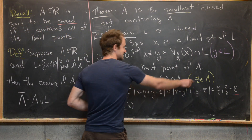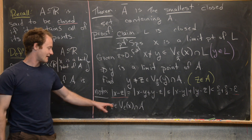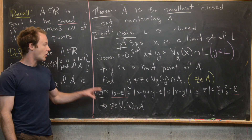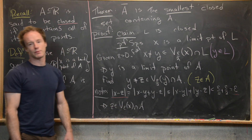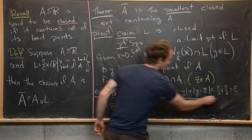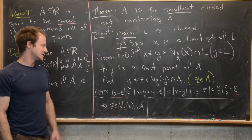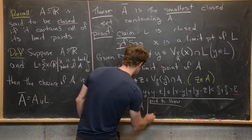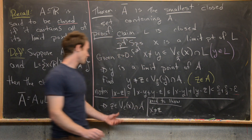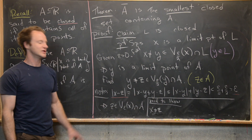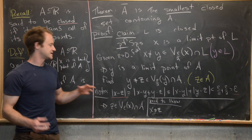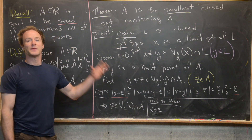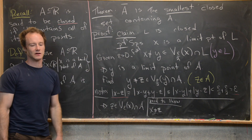We also know Z is an element from A, so Z is in the epsilon neighborhood of X intersected with A. That's almost enough for X to be a limit point of A, i.e., X to be in L. The last thing we need to show is that X is not equal to Z, which makes this intersection contain a point not equal to X, meaning X is a limit point of A, so X is inside of L. Thus L contains all of its limit points, making L closed.